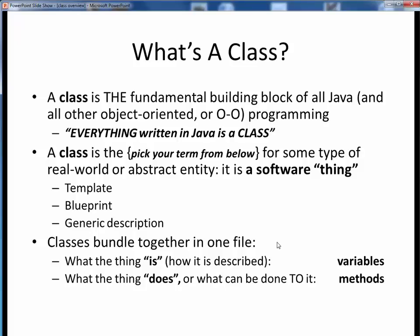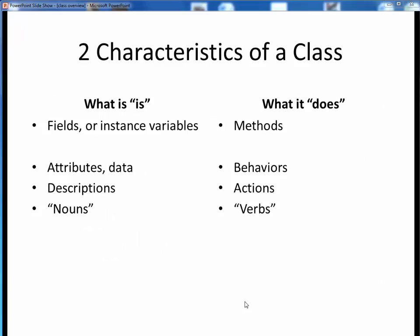A class bundles together in one place what that thing is, or how it's described, and what that thing does, or can have done to it. What that thing is is represented by some handful of variables. What that thing does is represented by methods. So here we see all three types of software containers in one place. A class is a container for variables and methods, which in turn are themselves containers for data and instructions. The two primary characteristics of the class are what it is and what it does.